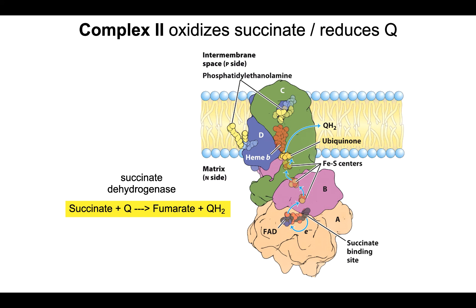Complex II is succinate dehydrogenase — the exact same reaction seen in the citric acid cycle. It uses succinate to reduce Q into QH2, converting succinate into fumarate. FAD acts as the catalytic cofactor mediating electron transfer from succinate to Q. The stoichiometry: succinate plus Q gives fumarate plus QH2. Notably, complex II does not pump protons across the membrane.